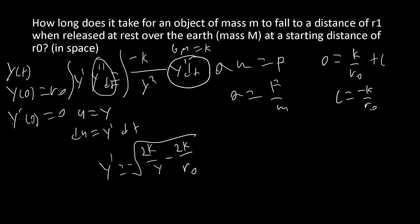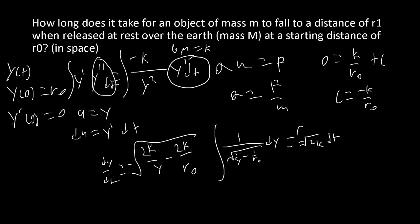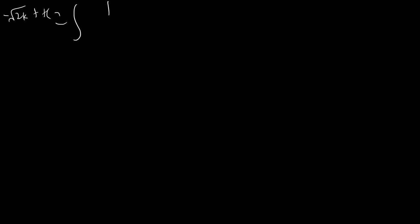Let's go ahead and solve it. To separate the variables, this becomes dy/dt, and we end up with 1 over the square root of (1/y - 1/r₀) dy = square root of 2k dt. Then we integrate both sides. The integral of the right side is -√(2k) · t + z. This equals the integral of 1 over the square root of (1/y - 1/r₀) dy.